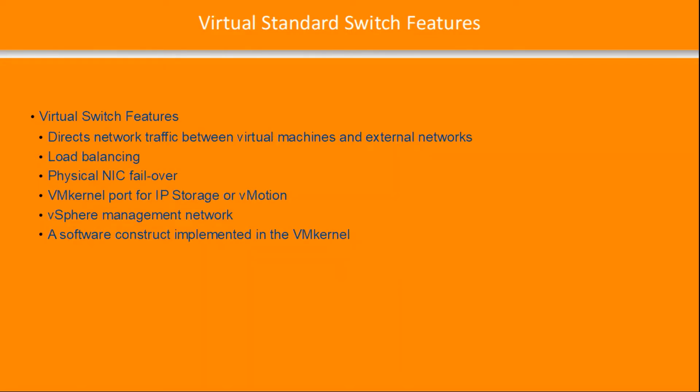The other type of connection is a VM network port group to allow connectivity between virtual machines. Features include directing traffic between virtual machines and external networks, load balancing, physical NIC failover, a VM kernel port for IP storage, vMotion, a vSphere management network. The virtual standard switch is a software construct implemented in the VM kernel.